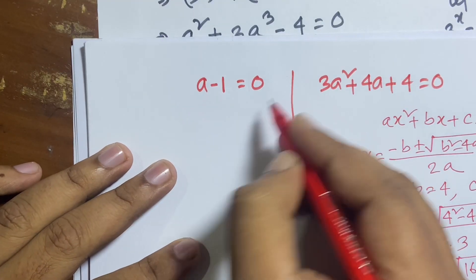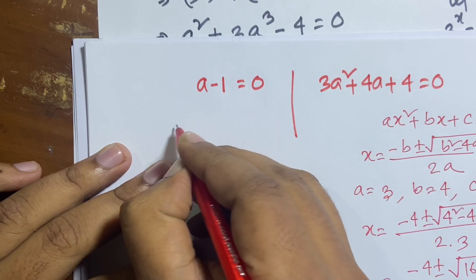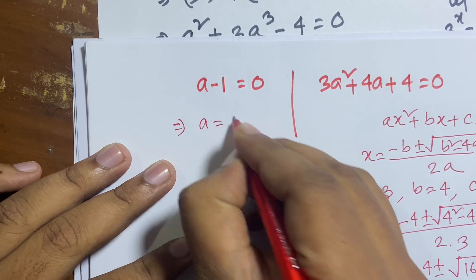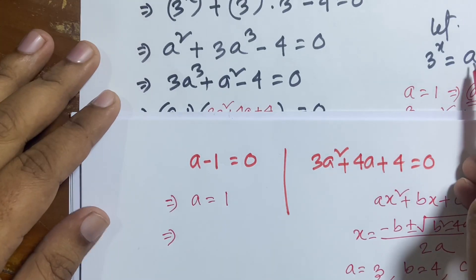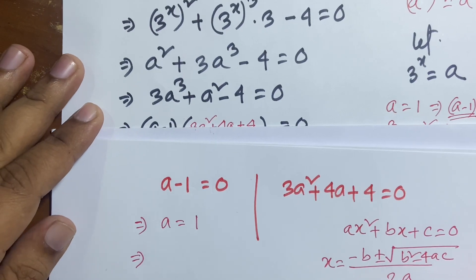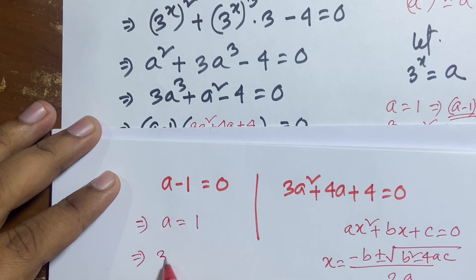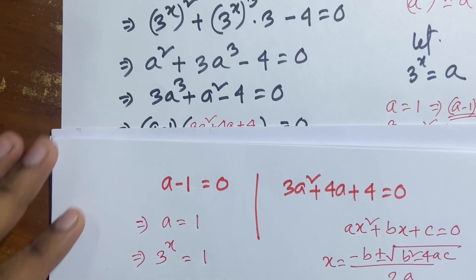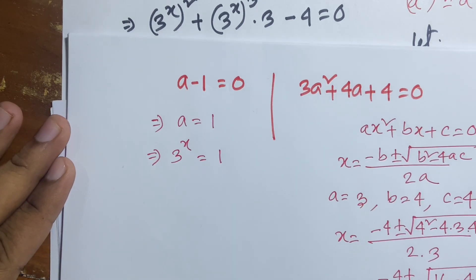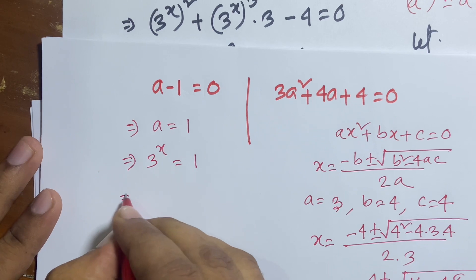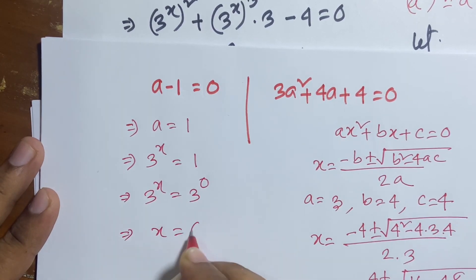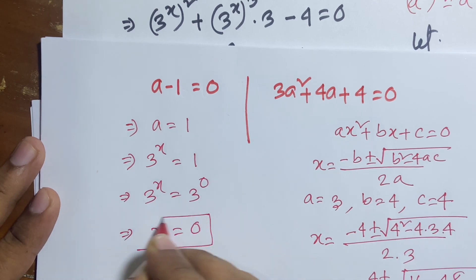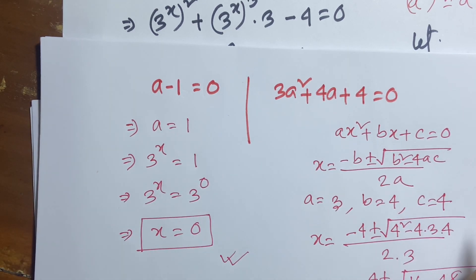So a minus 1 equals 0, meaning a equals 1. Since a equals 3 to the power x, we have 3 to the power x equals 1, which equals 3 to the power 0. Therefore x equals 0. This is the value of x. If you enjoyed this video, please subscribe to my channel. Thank you all, goodbye!